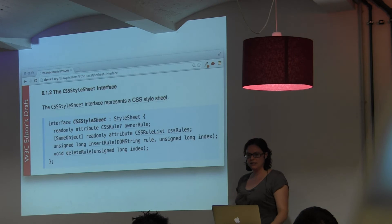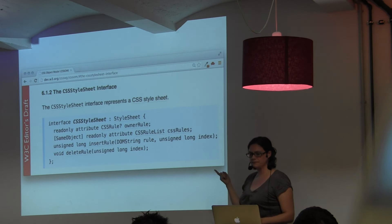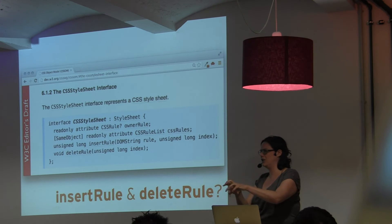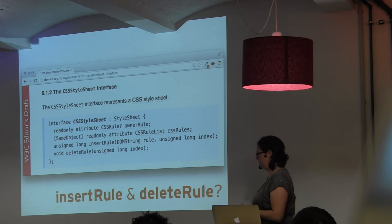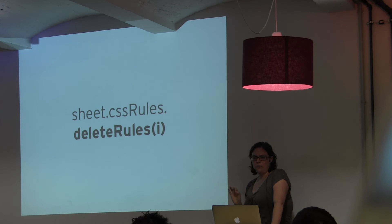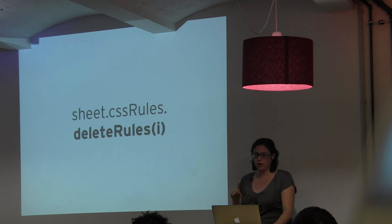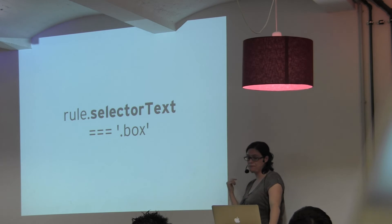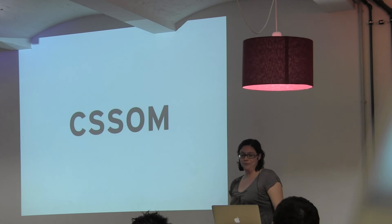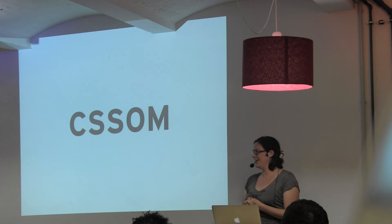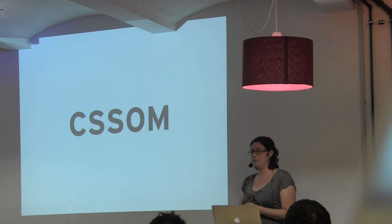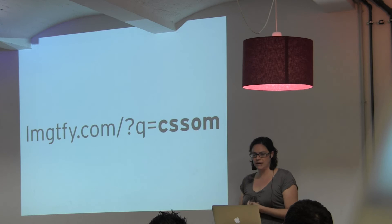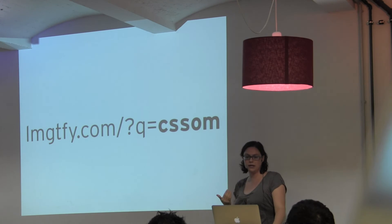The CSS StyleSheet interface also has insert rule and delete rule. I love the idea of taking CSS and actually changing it instead of just adding to it. To use delete rule, you need to know the index of the rule, which gives you the problem of knowing which rule you want to delete. Luckily every rule has the selector text, and you could look at that — for instance, the selector text might have .box. Anyway, CSSOM has all these interfaces that are kind of hard to use and possibly poorly implemented, but I think they're exciting and I really think you should dive in and form your own opinions. The document is being written for us and for browser implementers and we should look at it, play with it, and give some feedback.